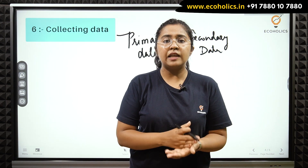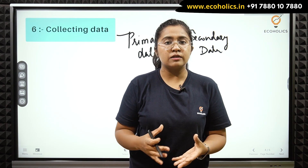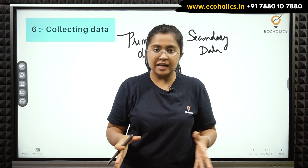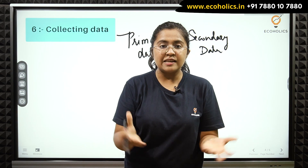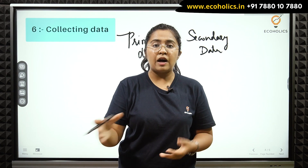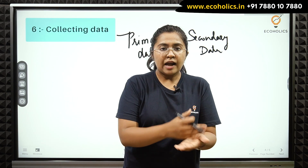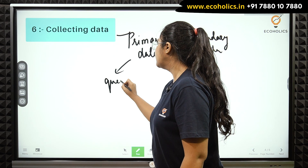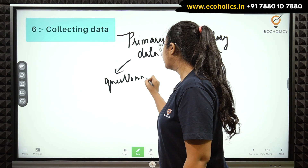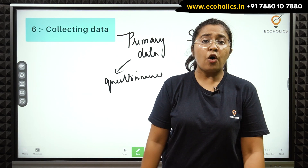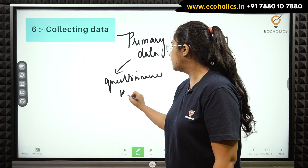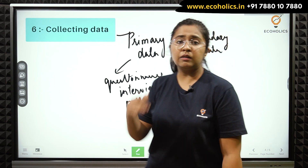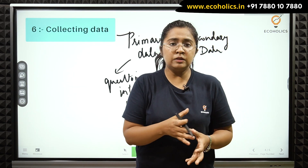Primary data is that type of data which is collected for the first time by a researcher through collecting information from the sample the researcher has decided. After finalizing the sample size and design, the researcher goes into the field to collect the data. This can be done through a variety of ways — for example, filling out questionnaires, conducting interviews, or making various types of polls.